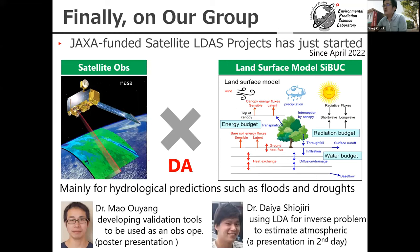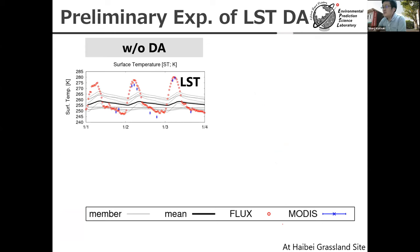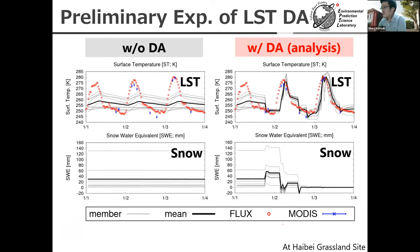Let me introduce our group, since this is our first time joining this workshop. This year, we have just started a JAXA-funded satellite land data assimilation project. In this project, we plan to assimilate JAXA satellite observations into our land surface model based on MATSIRO. We are mainly interested in hydrological prediction, such as flood and drought. I joined this workshop with two postdocs: one working on the observation operator, and one using data assimilation for the inverse problem to estimate forcing data. We have a preliminary experiment but will skip it due to limited time.